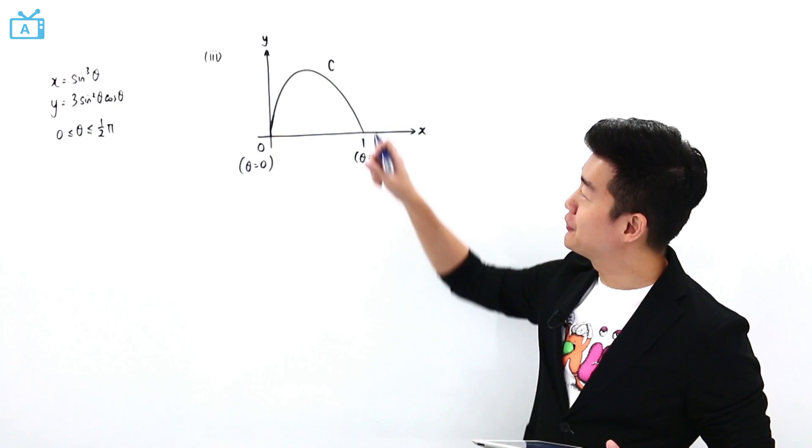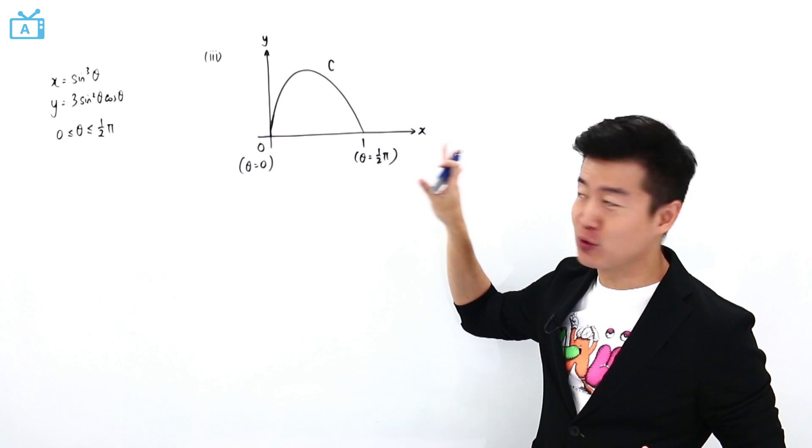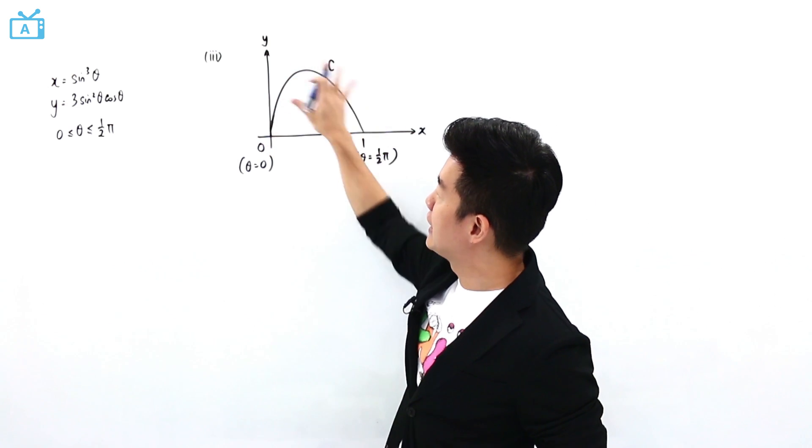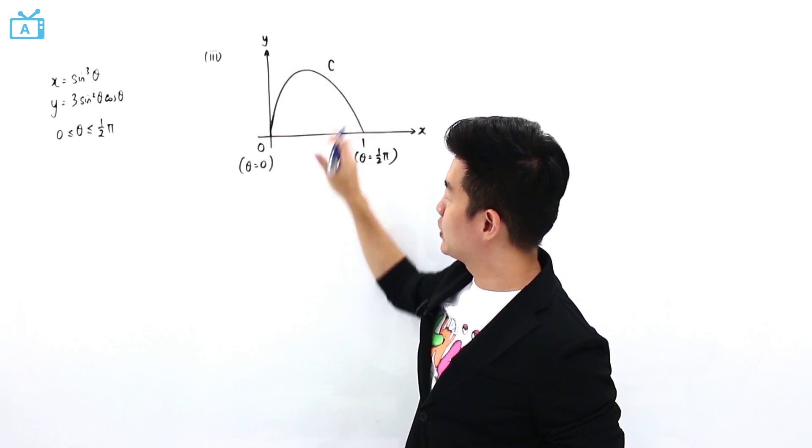We are looking at the area that is bounded by the curve C and the x-axis. That is why it is good for us to actually plot this using our graphing calculator for us to visualize. And the area is actually this portion.